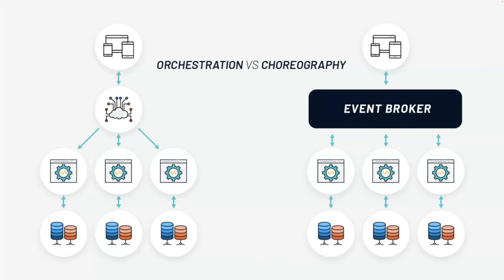At a high level, choreography — shown on the right — is akin to what you know from PubSub or message-driven systems. You have a bunch of processes that need to create a change of flow through an event broker. The broker has subscribers and publishers that are all decoupled from each other. A publisher can publish a state message without knowing who will pick it up — that's where their job stops.